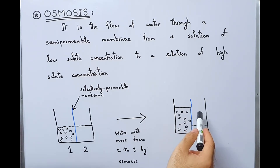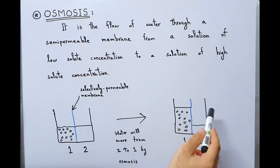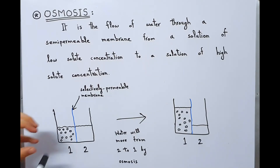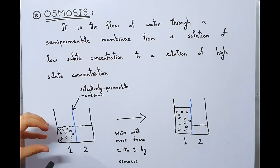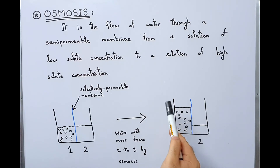For example, in nephrotic syndrome the protein levels are decreased and edema is caused. So we have learned that when solute particles are present, they create an osmotic pressure which attracts water towards them, as seen in this example. This movement of water through a semi-permeable membrane is called osmosis.